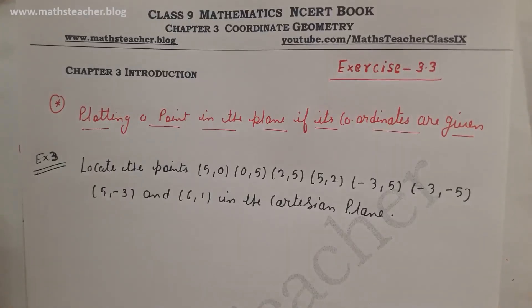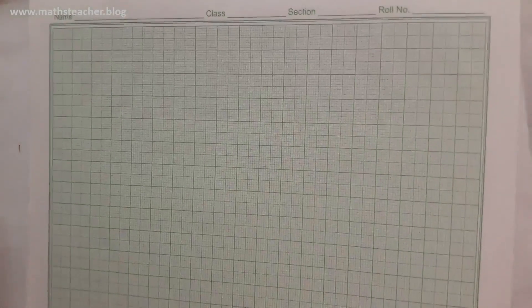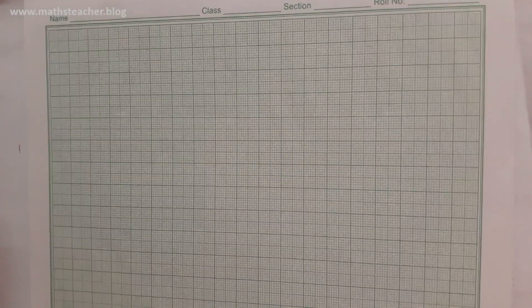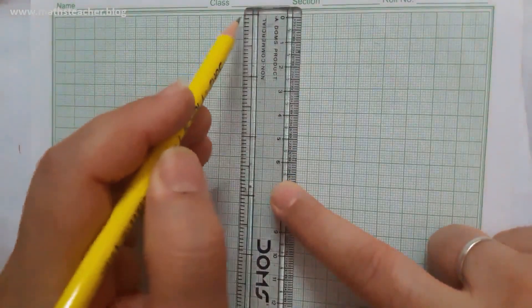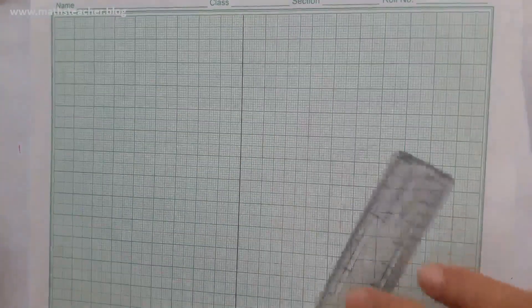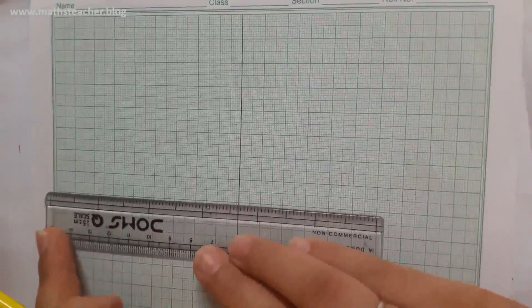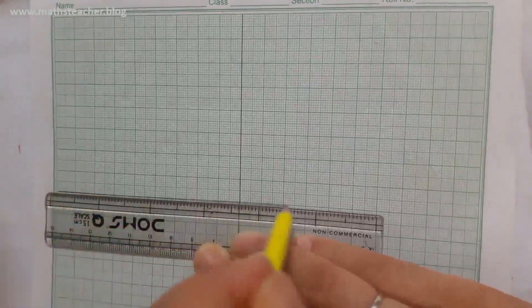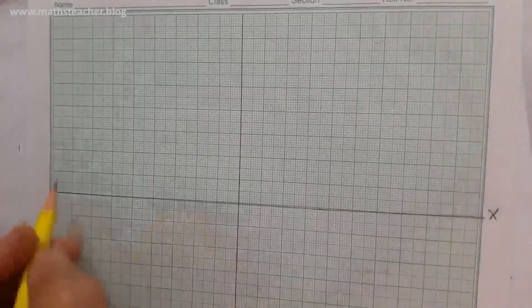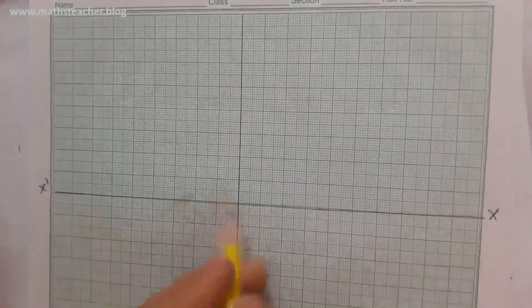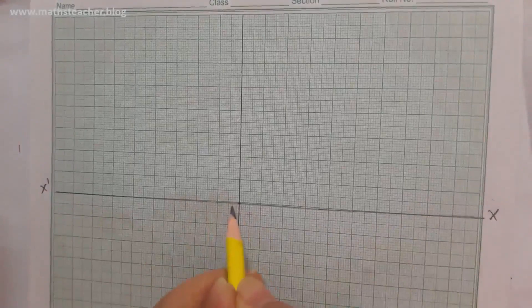First of all, what do we do? We take a graph paper. On this graph paper you have to draw two axes: one horizontal line and one vertical line. The horizontal line we will call the x-axis and the vertical line we will call the y-axis. So I have drawn a vertical line — that is the y-axis — and a horizontal line. These two perpendicular lines form our axes.